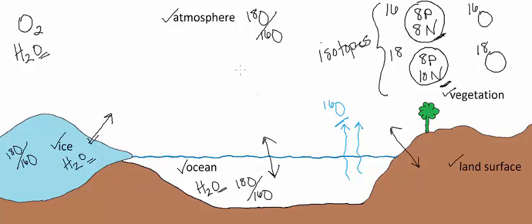it changes the oxygen isotope ratio of the atmosphere and it changes the oxygen isotope ratio of the ocean. Because more O16 is being evaporated into the atmosphere and more O18 is being left behind.